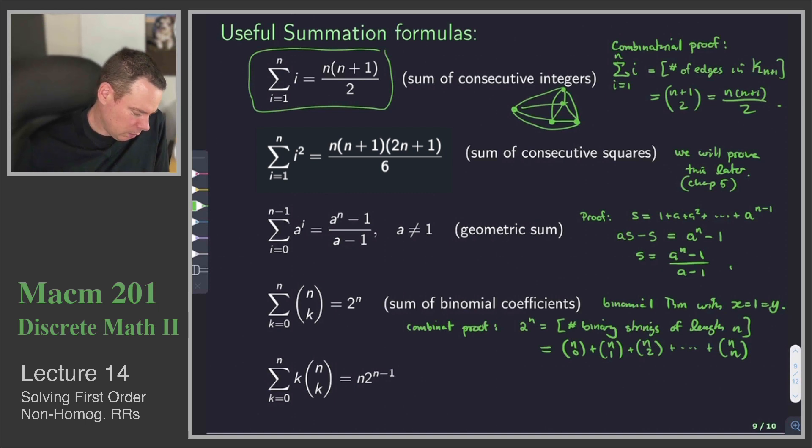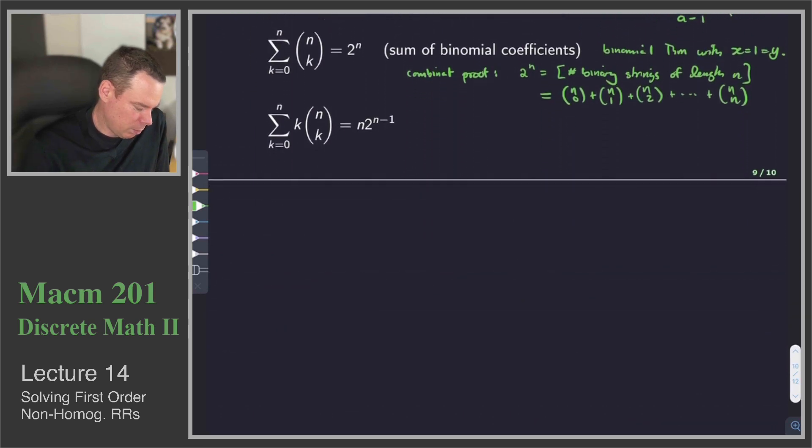How about the last one? Well, the last one, this says that the sum of these weighted binomial coefficients, where it's k times n choose k, is equal to n times 2 to the power of n minus 1. There's actually a few ways we can see this. We'll see more later on in the course. But I'll do a couple of ways to see this right now. First thing to notice, though, is that I don't need to start the sum at 0, because if k is 0, the first term is 0. So this is equivalent to the sum that starts at 1.